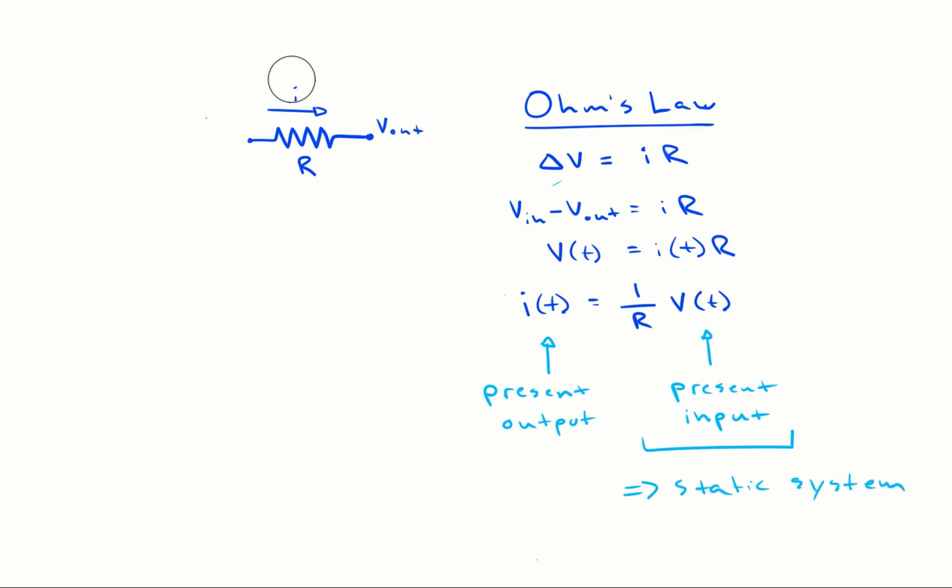For this reason, we consider this to be a static system. Let's return to another dynamic system, an automobile. You can depress the gas pedal and the net effect is a forward thrust on the vehicle. This is the input, u of t. The resulting forward velocity is the output, v of t.